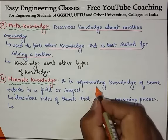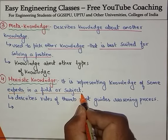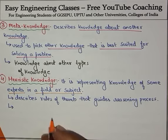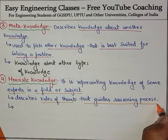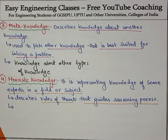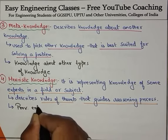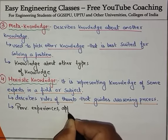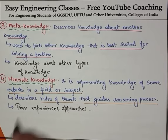Then we have heuristic knowledge. It represents the knowledge of some experts in a field or subject. It describes rules of thumb that guide the reasoning process. This knowledge is based on the previous experience of experts and the approaches that experts suggest. That is heuristic knowledge.